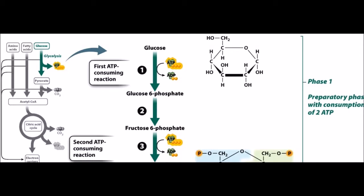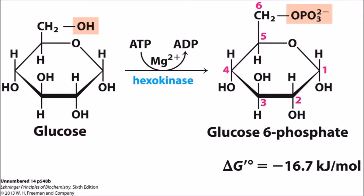When glucose enters a cell, ATP donates a phosphate and it becomes glucose 6-phosphate. ATP then donates another phosphate to glucose 6-phosphate, converting it to fructose 6-phosphate.